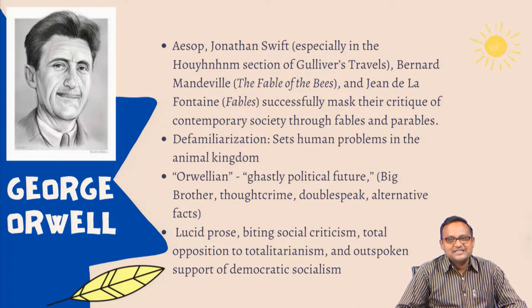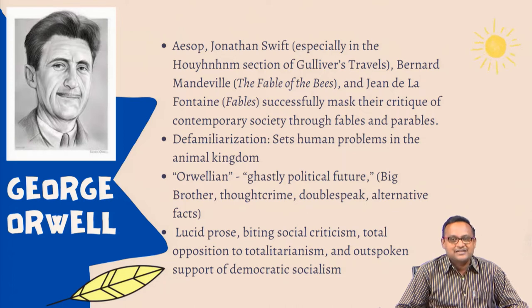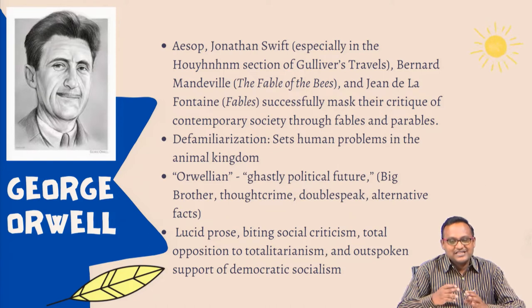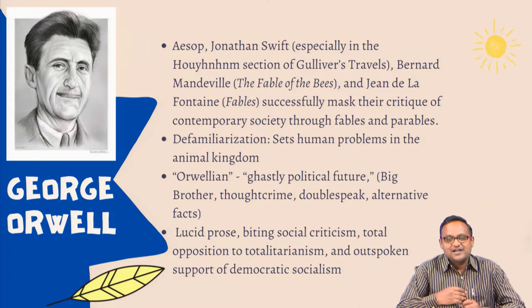This can be said of all fables and political allegories — they make use of the technique called defamiliarization, which we discussed in a previous class. When you set human problems in an animal kingdom, you defamiliarize the readers with the contemporary context, and once you create that necessary distance, readers are able to look at it from a fresh perspective. That is also one of the techniques used in the novel.